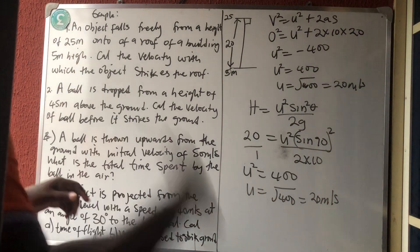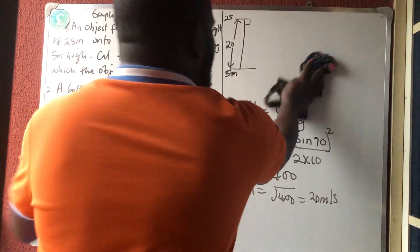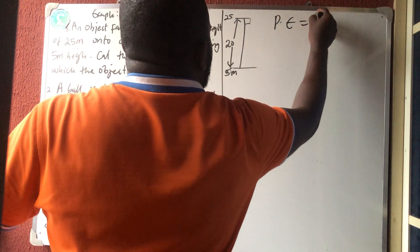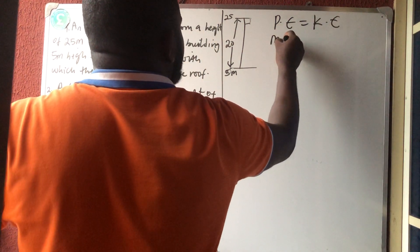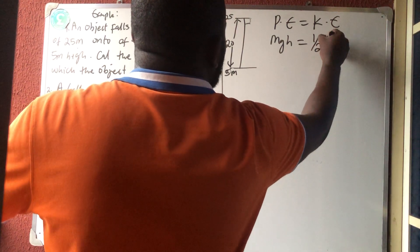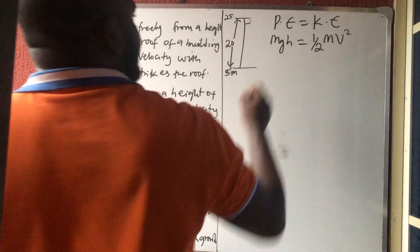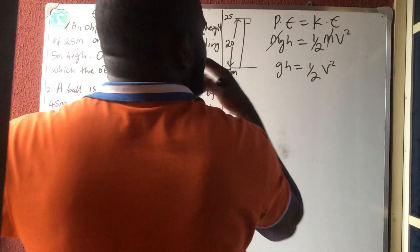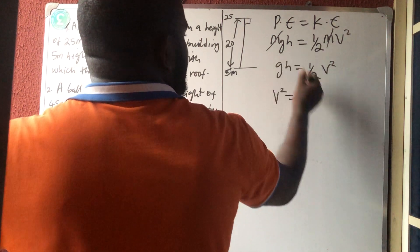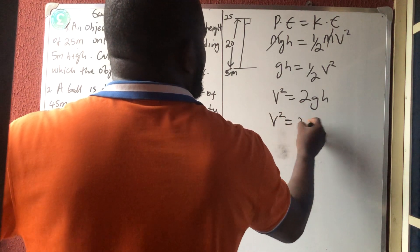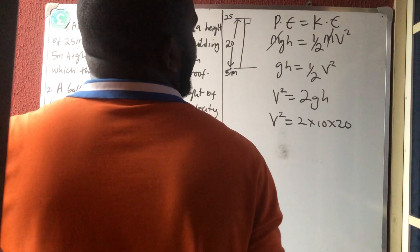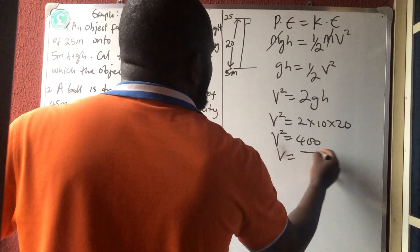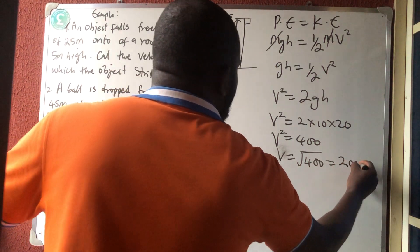There's another way to solve this — using energy. We say potential energy equals kinetic energy: MGH equals one-half MV squared. The masses cancel, so GH equals one-half V squared, meaning V squared equals 2GH. So V squared equals 2 times 10 times 20, which is 400. V equals square root of 400, which is 20 meters per second.